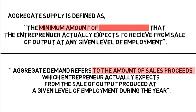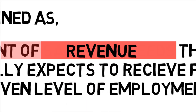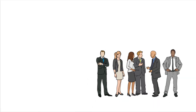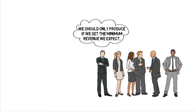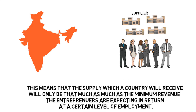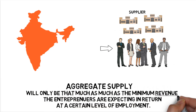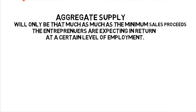Let us see how. In the last video, we replaced the word 'sales proceeds' with 'revenue.' Do it here as well. So we can now read the line as: minimum amount of revenue that the entrepreneurs expect to receive from the sale of output at any given level of employment. This means across the country, all entrepreneurs together expect at least some minimum revenue from producing their output. If they do not get that minimum amount of revenue, they will stop producing. The supply a country receives will only be as much as the minimum revenue entrepreneurs are expecting at a certain level of employment. Replace revenue with sales proceeds, and there you go — you have your original definition of aggregate supply.